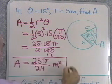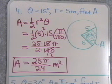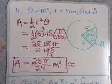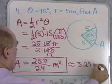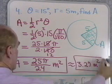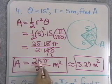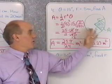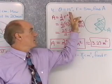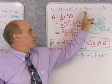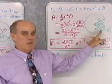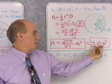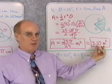Working through the calculation: 25 times 15 times π over 2 times 180. Dividing 15 into 180 gives 12, so I get 25π over 24 square meters — that is the exact value. Converting to a decimal gives approximately 3.27 square meters. So for a central angle of 15 degrees in a circle with radius 5 meters, the area of the sector is approximately 3.27 square meters.